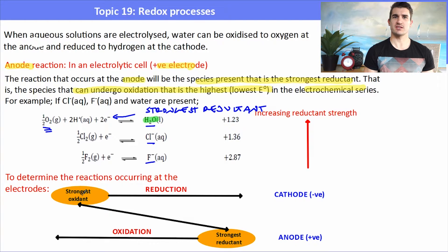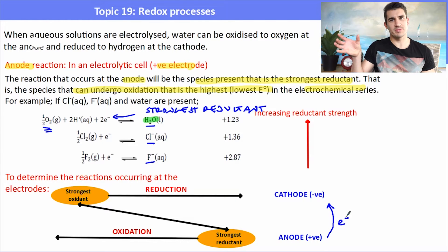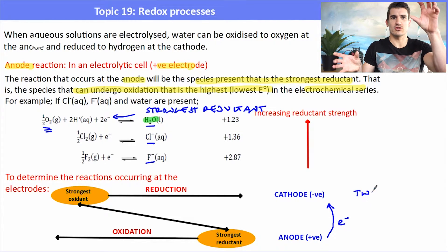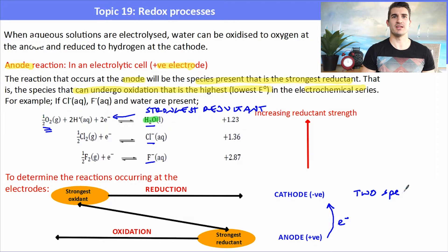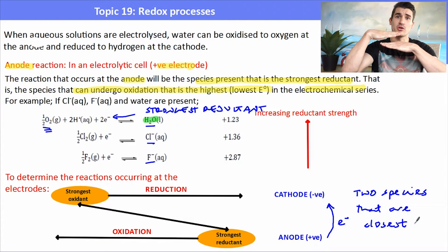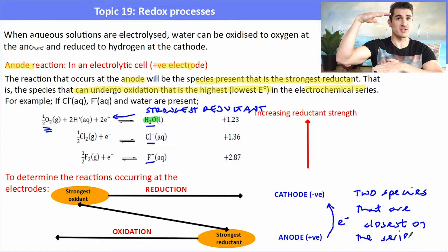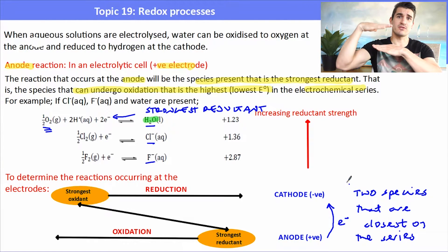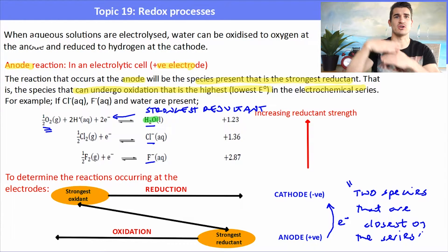We can use the 'back-to-front Z' method to work out what the reaction will be. The strongest reductant will be at the bottom on the right-hand side; the strongest oxidant at the top on the left-hand side. The oxidant will undergo reduction; the reductant will undergo oxidation. In a voltaic cell we look for species furthest apart (greatest E° difference), but in an electrolysis reaction it is the two species closest together on the series.